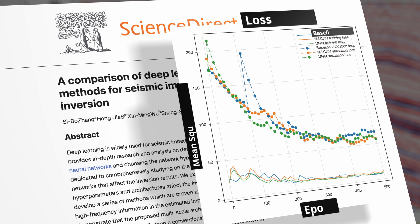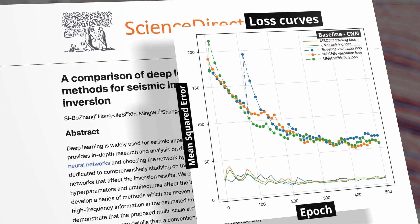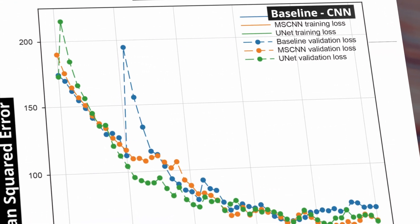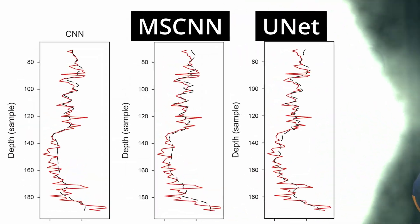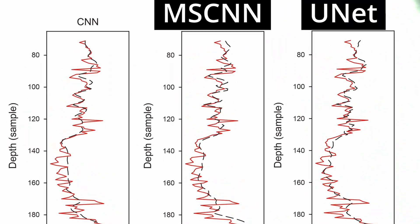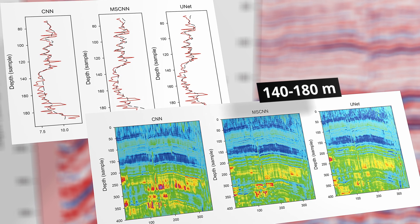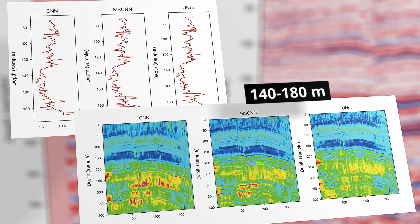Here we can see how they've been trained. The training and validation losses are getting better as you train. The training loss for MSCNN and UNet is lower. Looking at the predictions, MSCNN and UNet get better results than conventional CNN. Pay attention to the depth window where CNN predictions are very smooth — it's hard to see the layers, especially the thin ones.